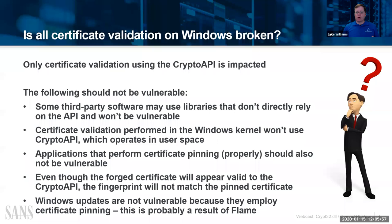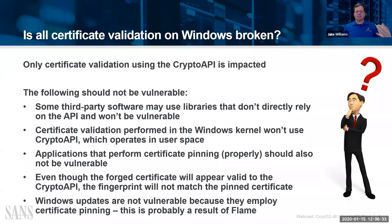Is all certificate validation on Windows broken? Only the crypto API's certificate validation is impacted — that's the good news. The bad news is that most certificate validation on Windows uses the crypto API. However, there are spots that aren't vulnerable: some third-party software uses libraries that don't directly rely on the API, and certificate validation performed in the Windows kernel is not affected, since the crypto API sits in user space.